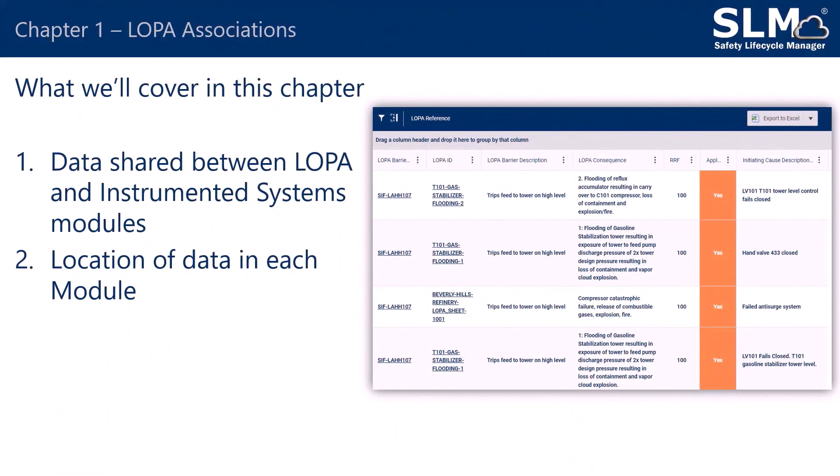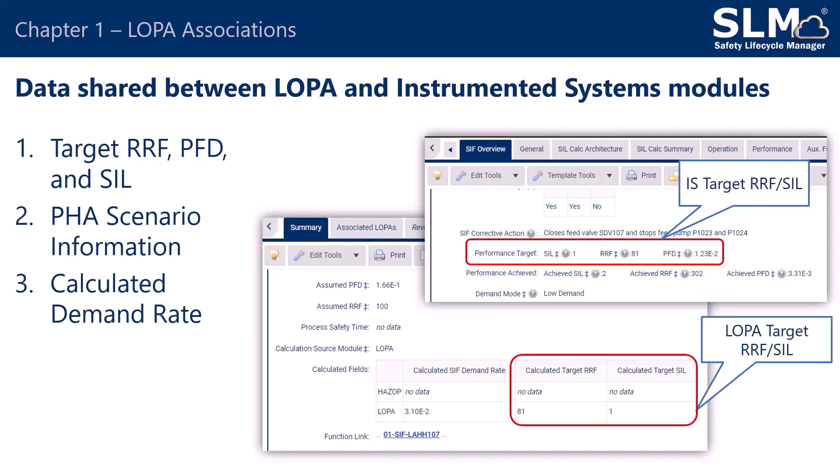In Chapter 1, we'll be covering data shared between LOPA and Instrumented Systems modules, and the location of data in each module. There are three main grouping categories of data shared between the LOPA and the Instrumented Systems module. First is the target risk reduction factor, which is also associated with the target probability of failure on demand and the safety integrity level for those IPLs. Second is the PHA scenario information, and third is the calculated demand rate.